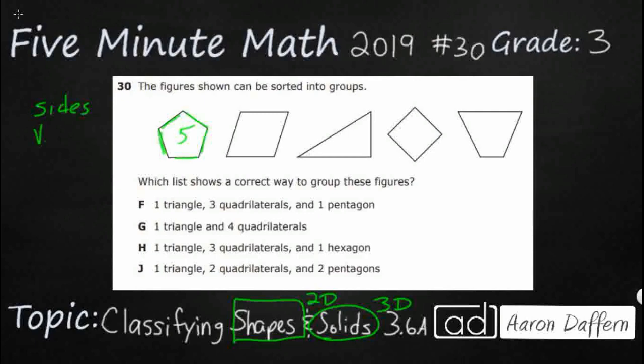But we can also look at vertices. Now vertices is the plural form of vertex. So if you've got one, it's a vertex. If you've got more than one, it's not vertexes, it's vertices. It's just a strange part of the English language. Those are corners. So let's see how many corners we have. One, two, three, four, five. So also five vertices.